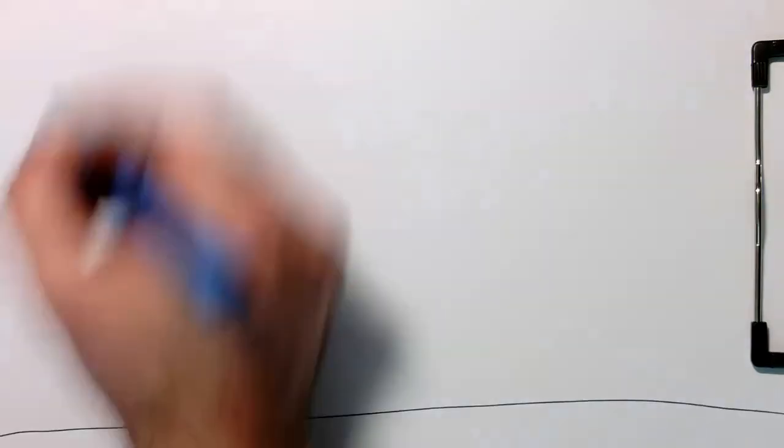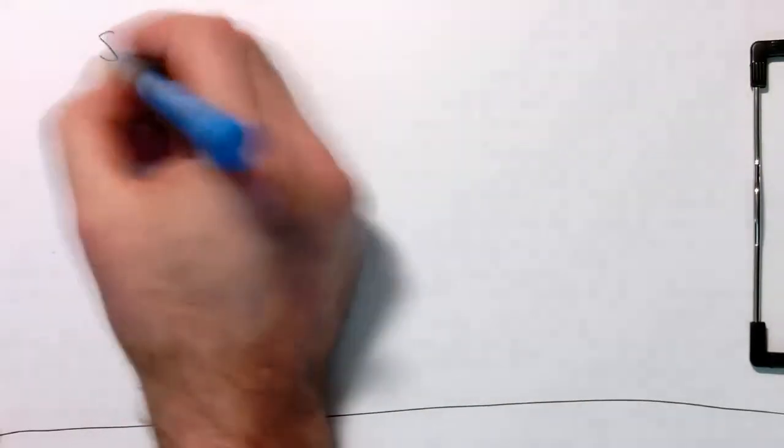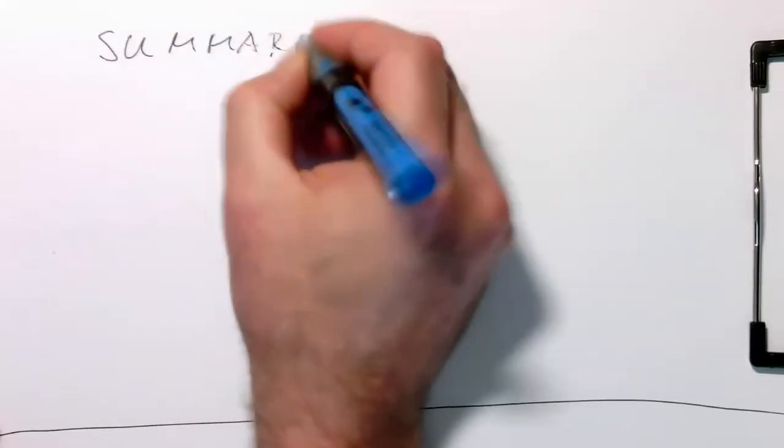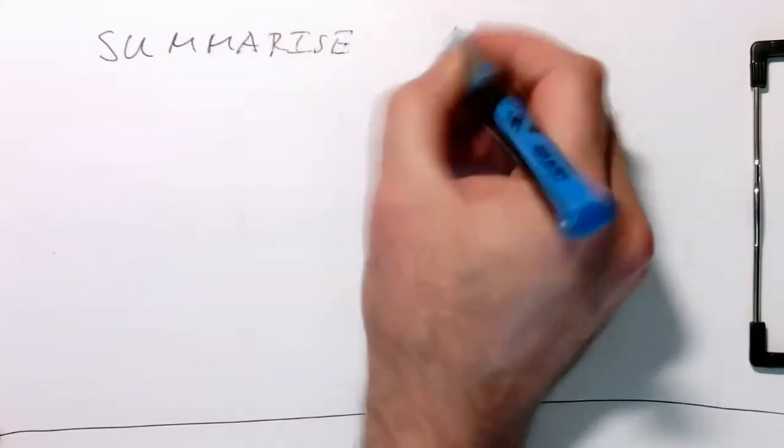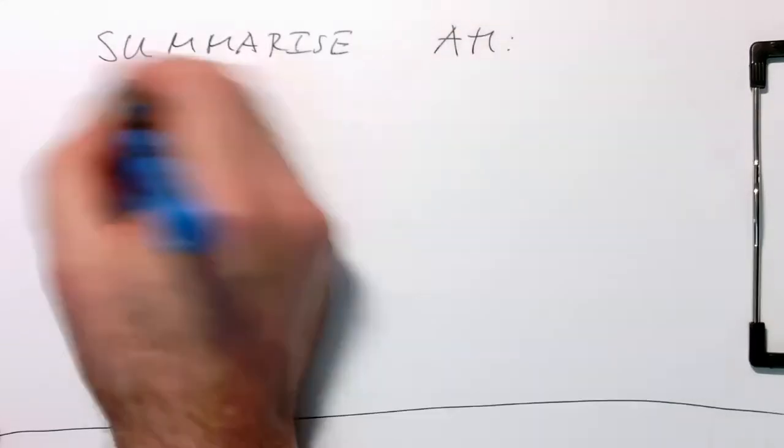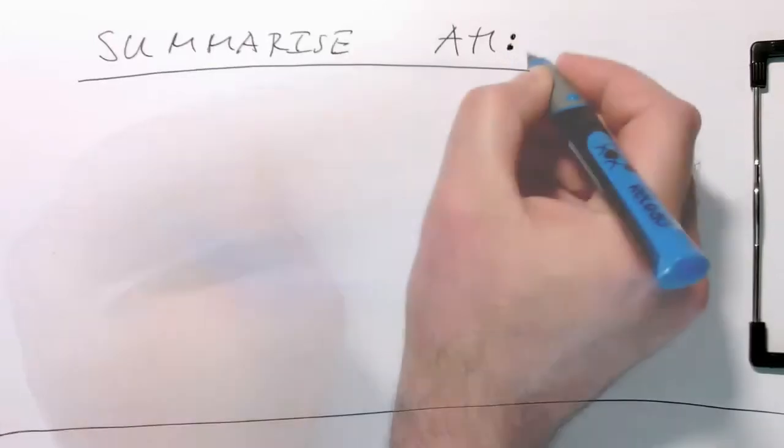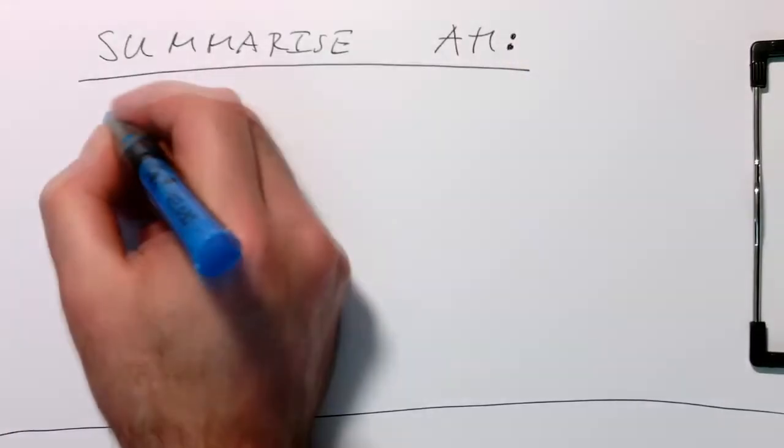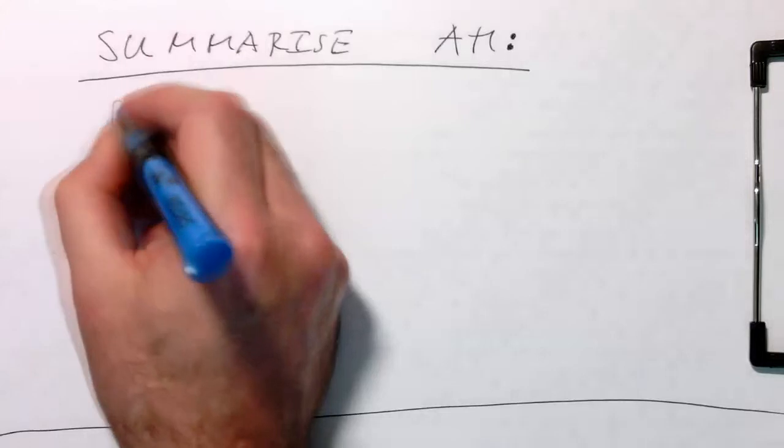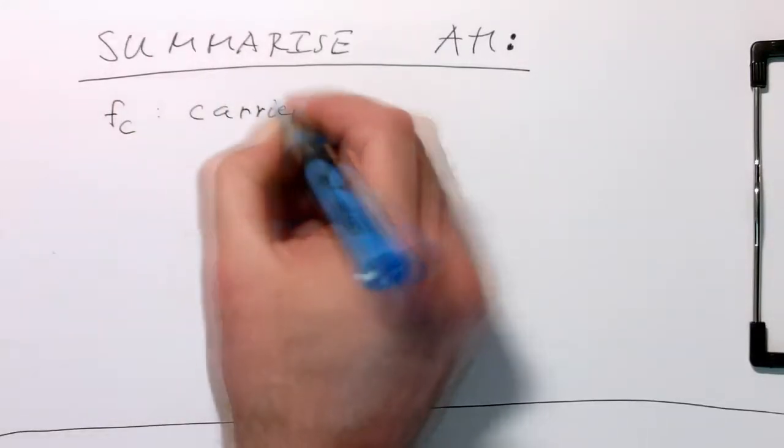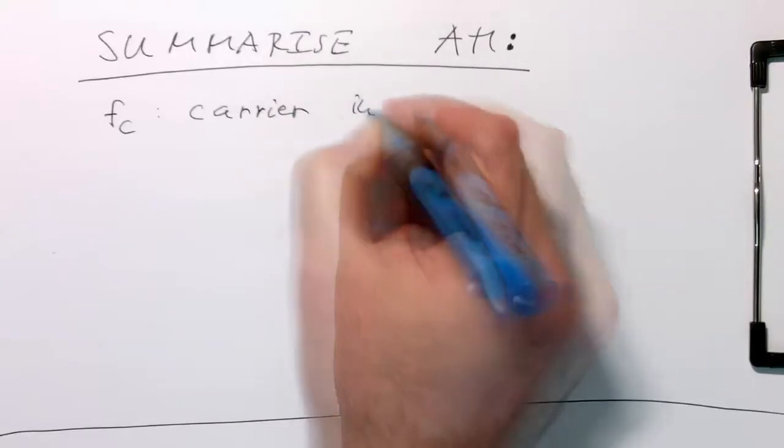So let's summarize the amplitude modulation so far in our digital system. So in general, we are defining Fc, the carrier, in normalized frequencies.